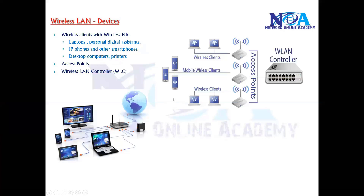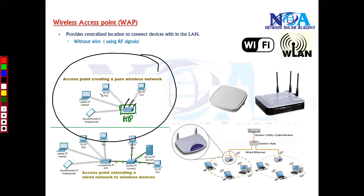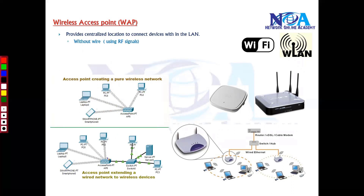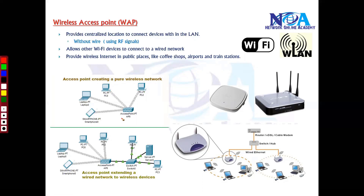Apart from end devices, you also need something called access points. Access points provide a centralized location where you can connect all devices without a wire — similar to how we use a switch. The access point has a built-in antenna which radiates signals within a coverage area, and as long as your devices are within that area they can be part of the network. Additionally, the access point allows wireless users to connect to the wider network and share information.